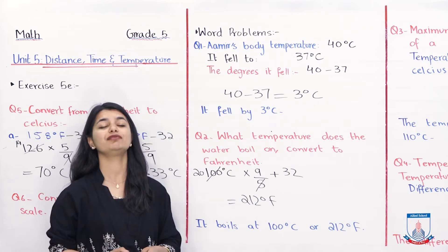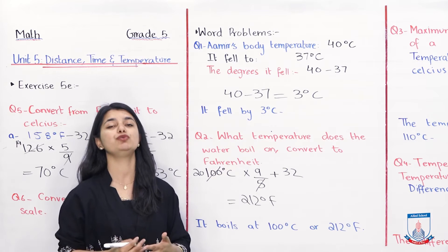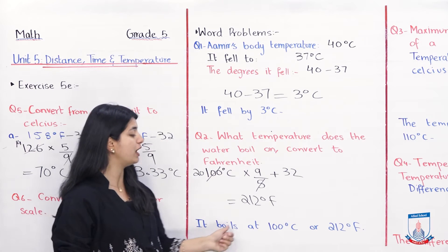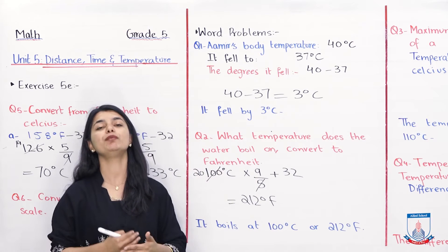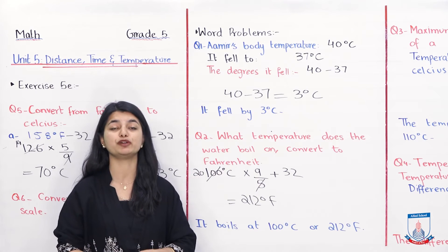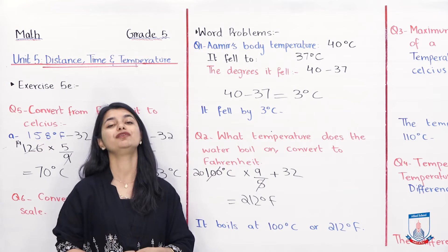So your answer will be 212 degree Fahrenheit, which we already know that in Fahrenheit the boiling point is 212. It boils at 100 degrees or 212 degree Fahrenheit. That was it for question number two. Now let's take a look at question number three.